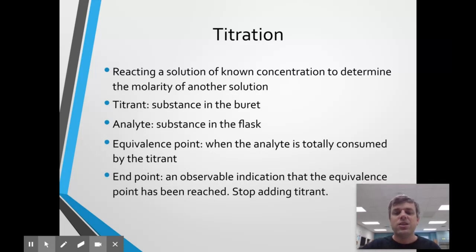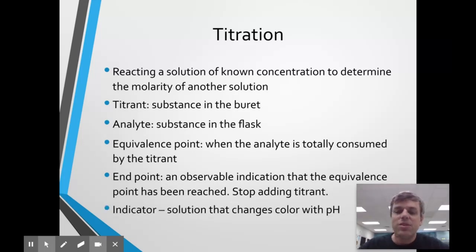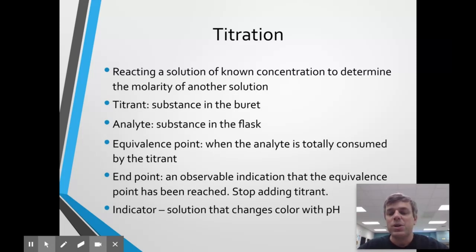There is also something called the end point, which is an observable indication that you have reached the end of the titration. The goal is to come up with some sort of identifier that lets you know to stop adding the titrant when you have reached or come very close to the equivalence point. We often add an indicator, which is a solution that changes color with pH in an acid-base titration. When we get into our unit on acids and bases, we'll talk more about selecting appropriate indicators.